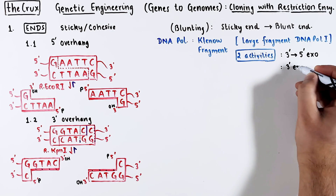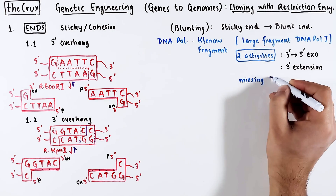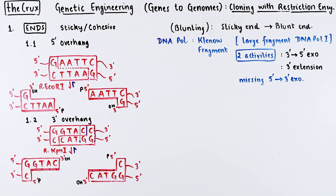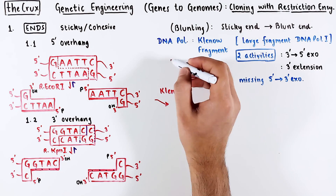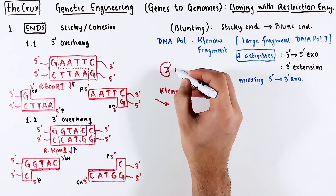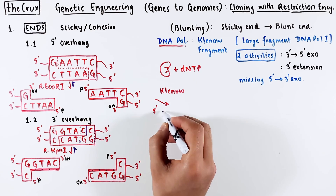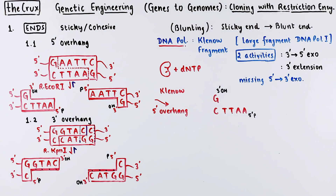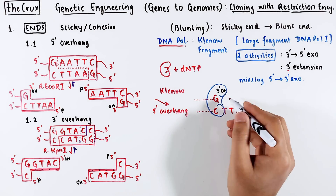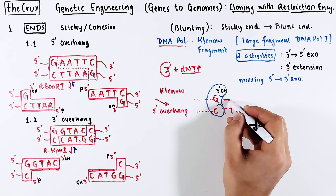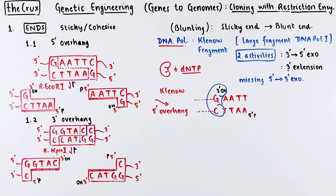The 3' extension is just a DNA polymerase activity. It cannot do the 5' to 3' nick translation. For blunting a sticky end, you take the digested DNA and add Klenow with the dNTPs. In this example, we are blunting a 5' sticky overhang. The Klenow assembles at the free 3' hydroxyl and uses its extension activity to add dNTPs to this end in a template-directed manner. This is just basic DNA polymerase activity.